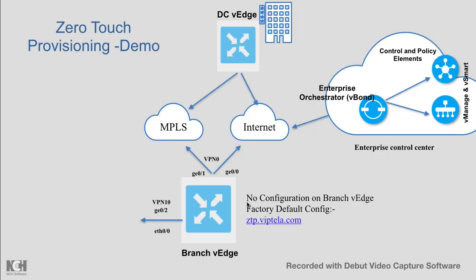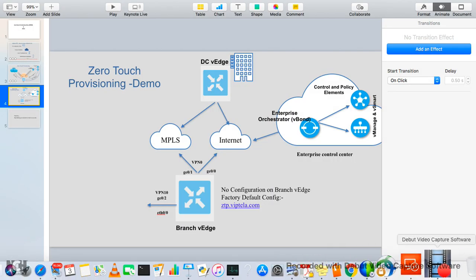Now let's look at the demo topology. The branch edge device is configured with nothing — it just has connectivity on GE0 as the internet interface, which is in shutdown state, with no configuration. We will see how the traffic flows to vBond and how all configuration is applied without any intervention from a skilled SME.